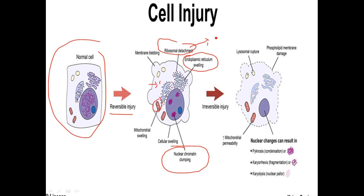In anaerobic respiration, lactic acid accumulates, causing the pH inside the cell to decrease — meaning increased H+. This increasing H+ can rupture the lysosome membrane. The lysosome is a single membrane-bound organelle that can be easily destroyed by the acidotic conditions inside the cell. Hydrolytic enzymes are then released into the cell.